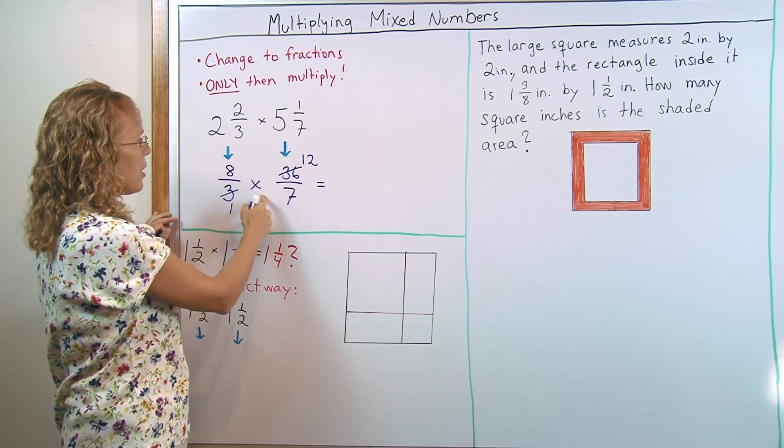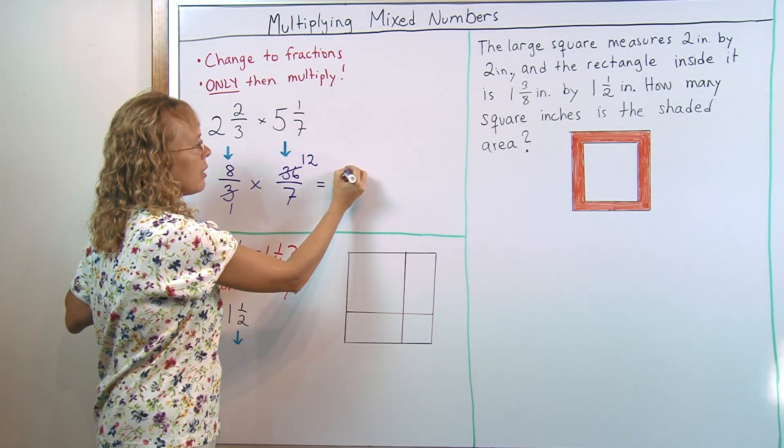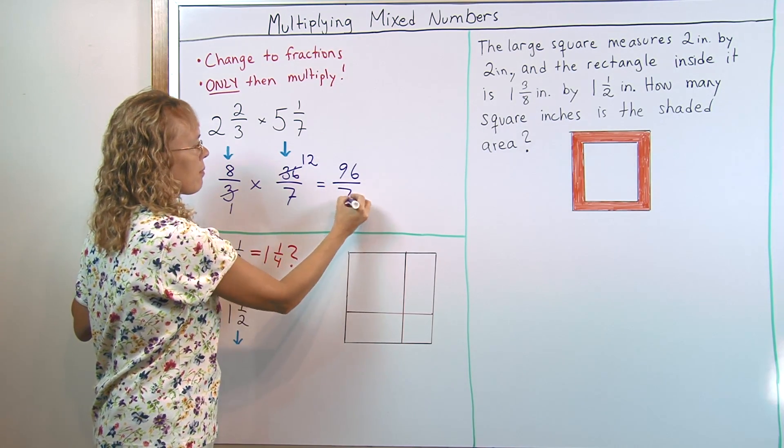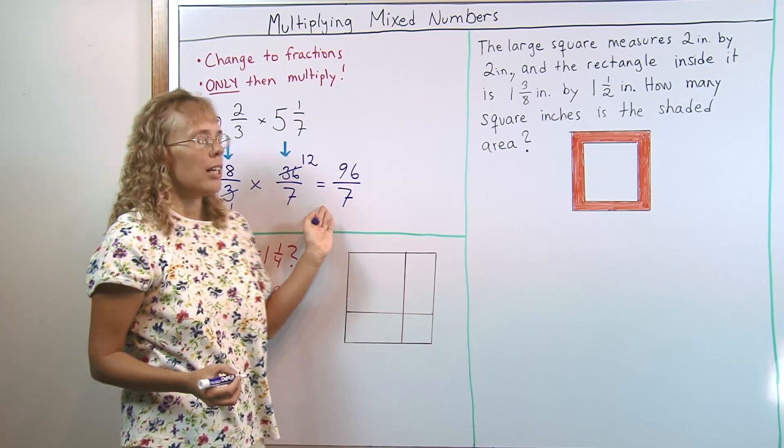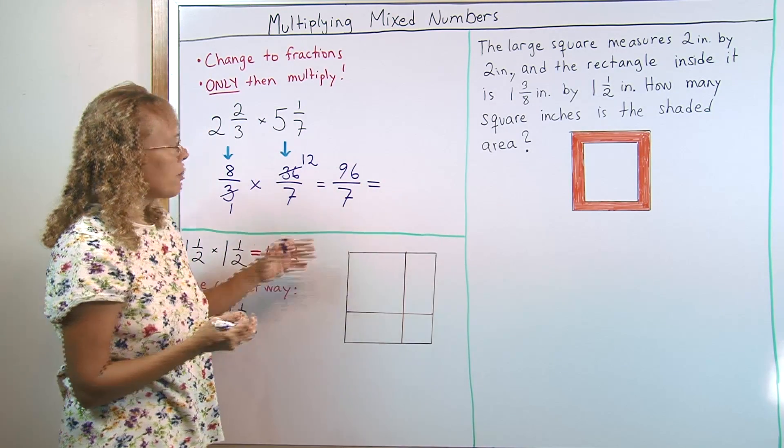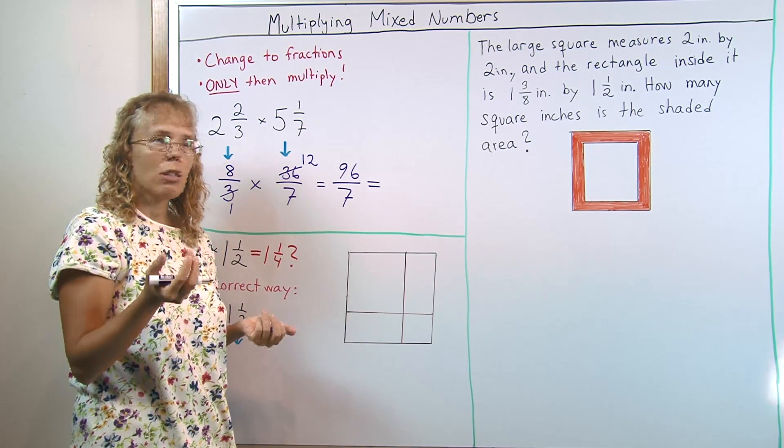And now 8 times 12 is 96. And then 1 times 7 is 7. And lastly, we need to write this as a mixed number. Okay, it's basically a division problem. Maybe you want to use long division. 96 divided by 7.